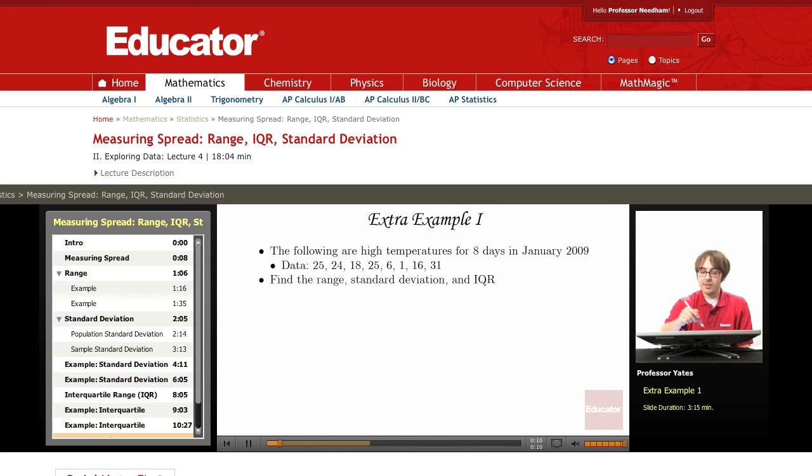The first data set we're looking at are high temperatures for eight days in January 2009 in Chicago. Our data are 25, 24, 18, 25, 6, 1, 16, and 31. The first thing we want to do is calculate the range.